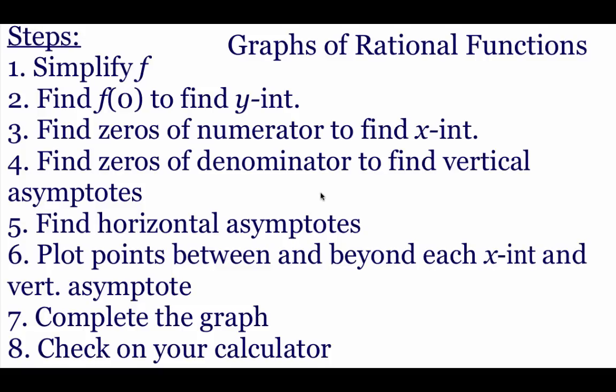Step four: set the denominator equal to zero to find our vertical asymptotes — that's the stuff we did in the last video. Step five: find those horizontal asymptotes. Step six: plot out a few more points between each x-intercept and our vertical asymptotes. Step seven: draw in that line to complete the graph. Step eight: always check your answer using your calculator.